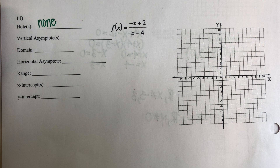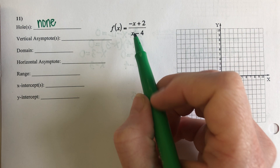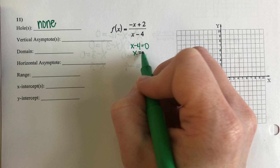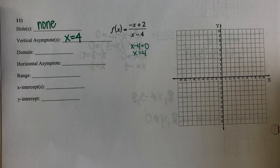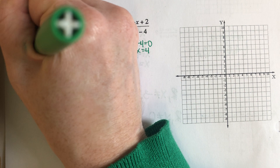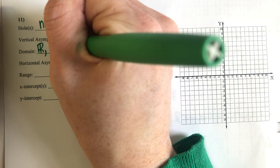My vertical asymptotes come from what's left in the denominator. If I quickly set X minus four equal to zero, I get that there is a vertical asymptote at X equals four. That affects my domain, so my domain is all real numbers but my X value is not allowed to equal four.